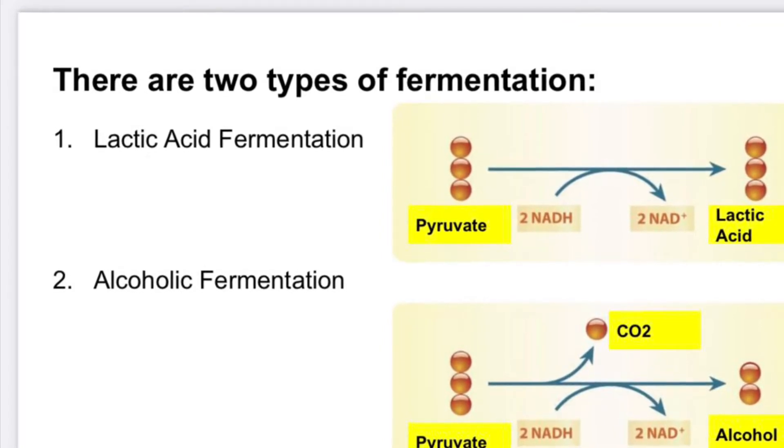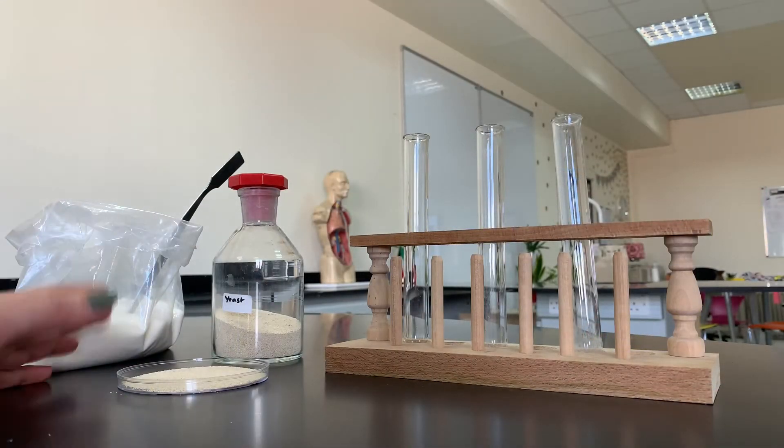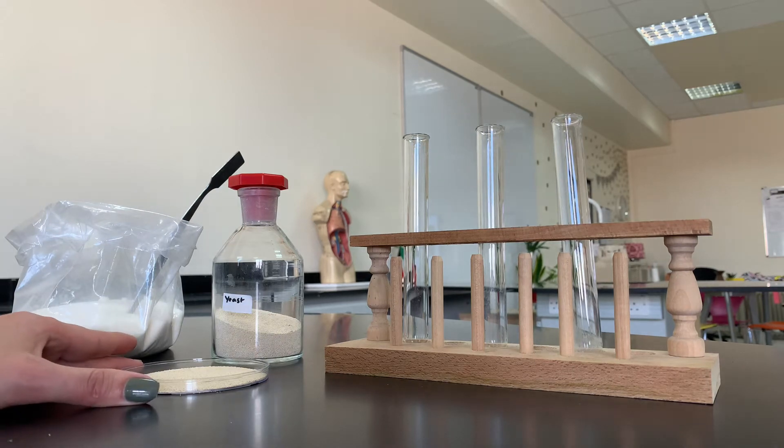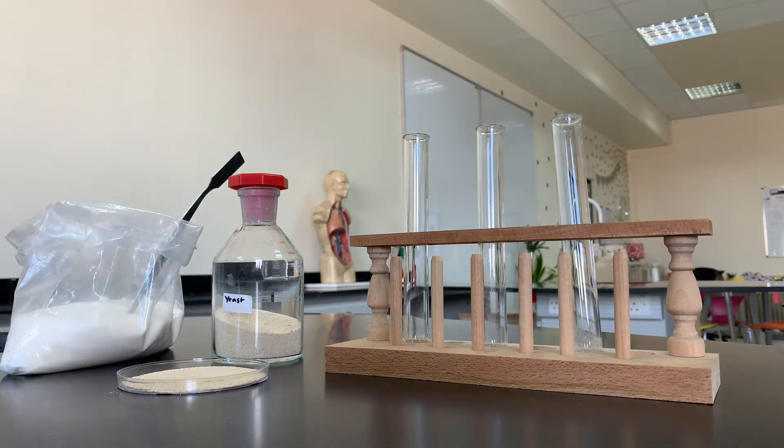The net amount of ATPs that are produced during this process of alcoholic fermentation is two ATPs, which actually came from the previous process, which was glycolysis.